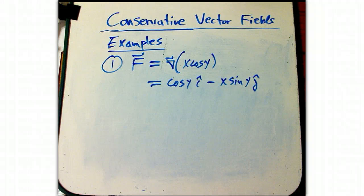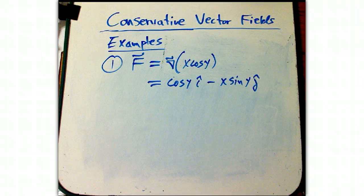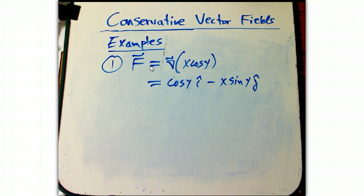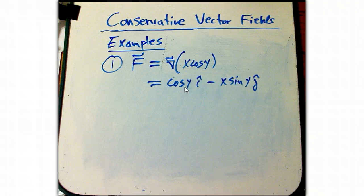Three quick examples of conservative vector field ideas. One is I start with a function, let's say x cosine y. I take its gradient, so automatically this is going to be a conservative vector field. It's going to satisfy all four properties from the previous video. And explicitly it's cosine y i minus x sine y j.